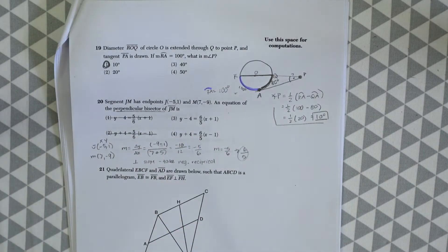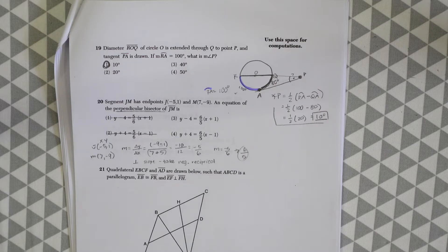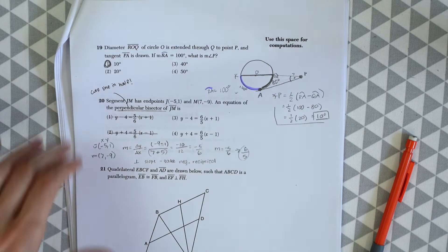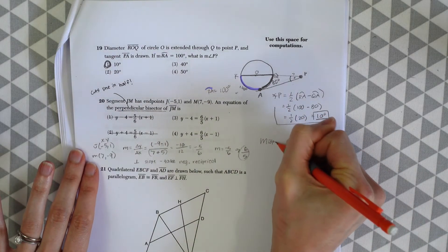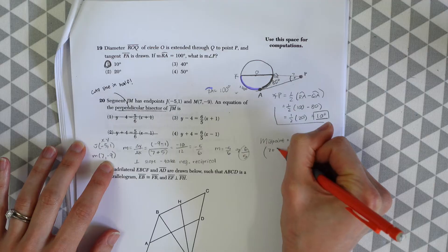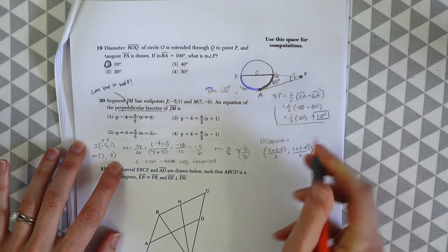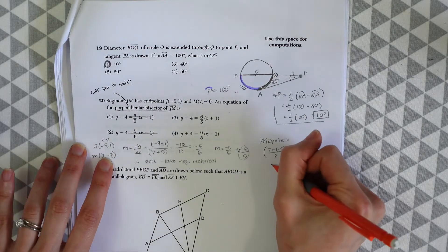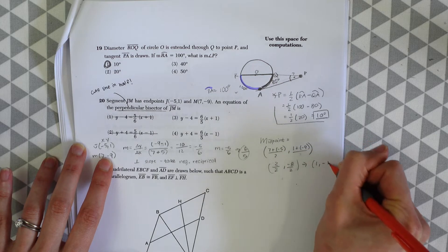The perpendicular bisector cuts segment JM in half, so we need to find the midpoint. The midpoint is just the average of these two coordinates. We have (7 + -5)/2 and (1 + -9)/2, which gives us 2/2 and -8/2, simplifying to (1, -4).